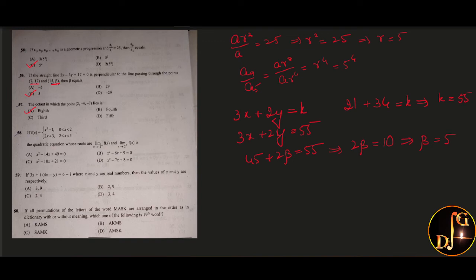Next, if f of x equal to x square minus 1 when x lies between 0 and 2, and 2x plus 3 when x lies between 2 and 3, then the quadratic equation whose roots are limit x tends to 2 minus LHL. First, for LHL substituting 2 in the first equation we get 3, and RHL is equal to substituting 2 in the second equation we get 7. So the quadratic equation which has the roots 3 and 7, the answer is option C, x square minus 10x plus 21 equal to 0.